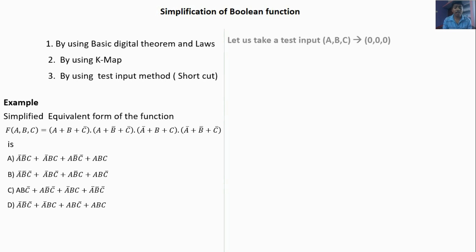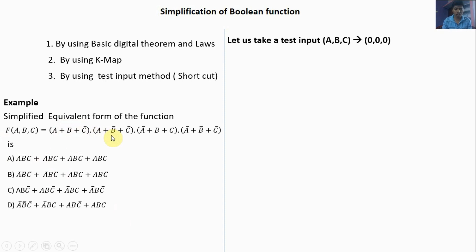By using the test input method, first let us take an input A, B, C as 0, 0, 0 — any one input. Substitute in the function. You should remember that in summation, if any one of the inputs is high, the total output will be high. In multiplication, if any one of the inputs is 0, the total term will be 0.